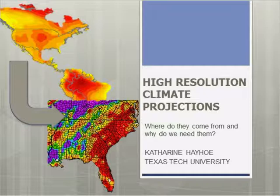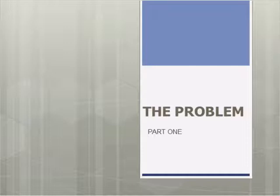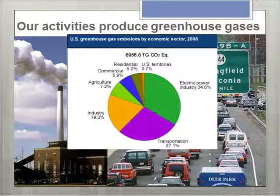What I'm going to be talking about today is the big picture of how we start with projections at the global scale, like the map you see in the top corner, but those projections aren't really useful if what you're interested in is what's going on at the local scale where we live, where we experience the impacts. So how do we get from that big scale to the smaller scale? Let's start with an overview of the problem.